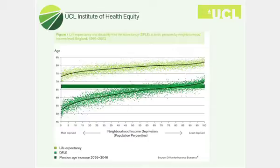The most deprived neighbourhoods are on the left, the wealthiest on the right, and we can see very clearly the social class gradient in both life expectancy and healthy life expectancy. You can see that gap between ill health and life expectancy closing as you go up the social class gradient.